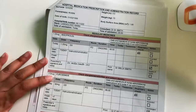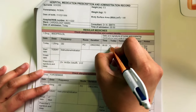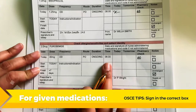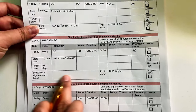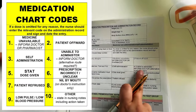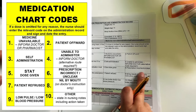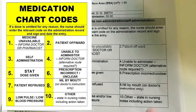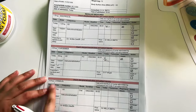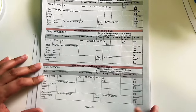Next page: Bisoprolol is due, and I did give this — so I'm going to put my signature. Next one, furosemide — it's due, but I did not give this because there's no prescriber signature and no bleep number. So the appropriate code is 6 — 'Prescription incorrect and unclear.' For atenolol, it's the same because there's no bleep number.